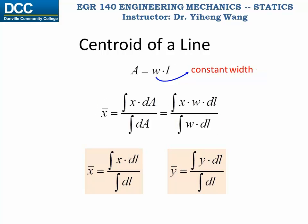Sometimes we can even further reduce the situation by canceling out the constant width of an area and get the coordinates for the centroid of a line. The line could be either straight or curved.